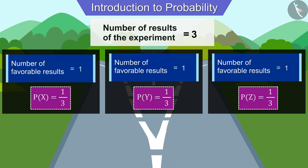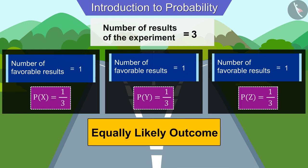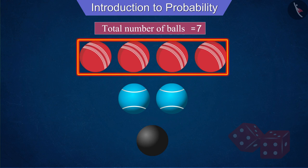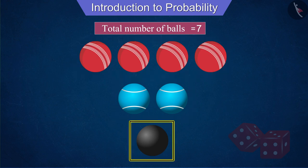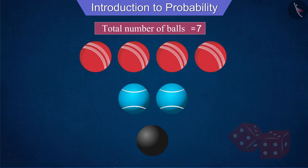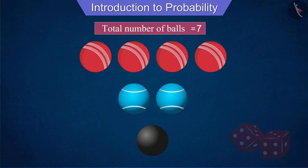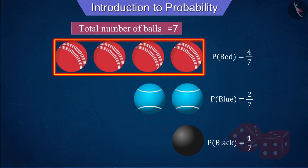Since the probability is the same for all three roads, we can also call them equally likely outcomes. Can you think of a situation in which the result is not equally likely? Suppose Joseph has seven balls in a bag, including four red, two blue, and one black ball. If Joseph had to pick out a ball without looking inside the bag, will the results be equally likely for all three colors? Due to the large number of red balls, it is most likely to come out.